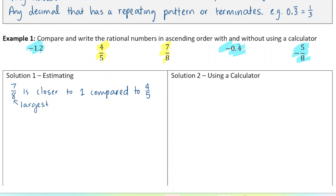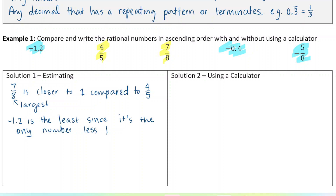Now let's look at the negative numbers. I know that negative 1.2 is the smallest, or the least, because it's the only number less than negative 1. Negative 0.4 repeating and negative 5 over 8 are both greater than negative 1.